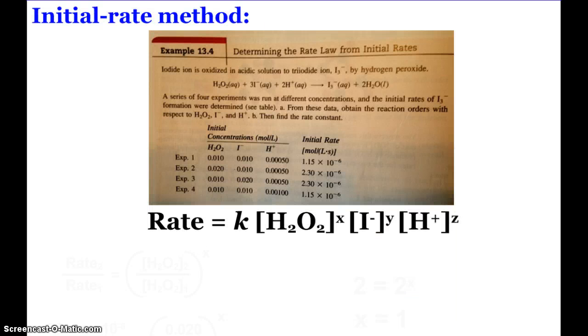I'm going to look at example 13.4. The iodine ion is oxidized in acidic solution to tri-iodine ion, and this is done with hydrogen peroxide. A series of four experiments were run and there's our data. Our rate is going to be K times concentration of hydrogen peroxide to some power, the concentration of iodine ion to some power, and the concentration of the hydrogen ion to some power. Those are our three reactants. We need to find X, Y, and Z.